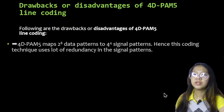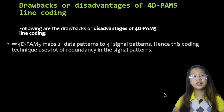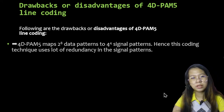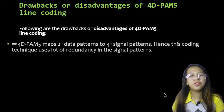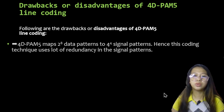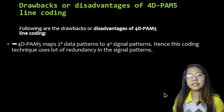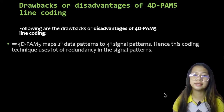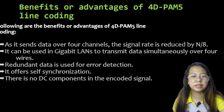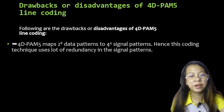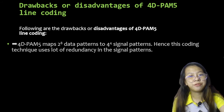The drawbacks or disadvantages of 4D-PAM5 line coding: 4D-PAM5 maps 2 to the power of 8 data patterns to 4 to the power of 4 signal patterns. Hence, this coding technique uses a lot of redundancy in the signal patterns. While redundancy can be used toward error detection, it is also a drawback of 4D-PAM5 line coding.